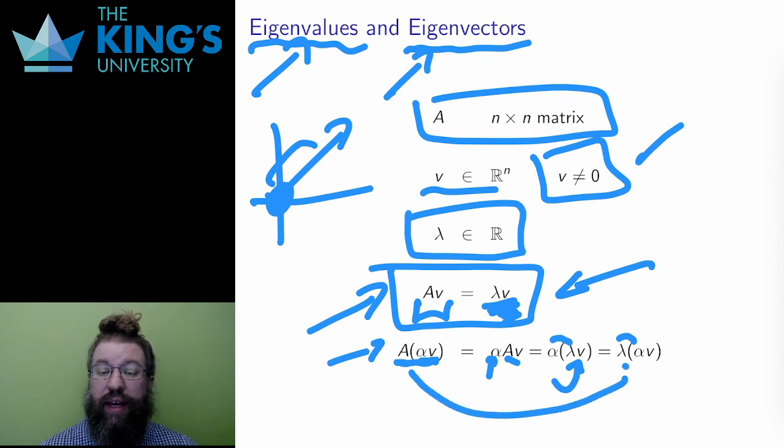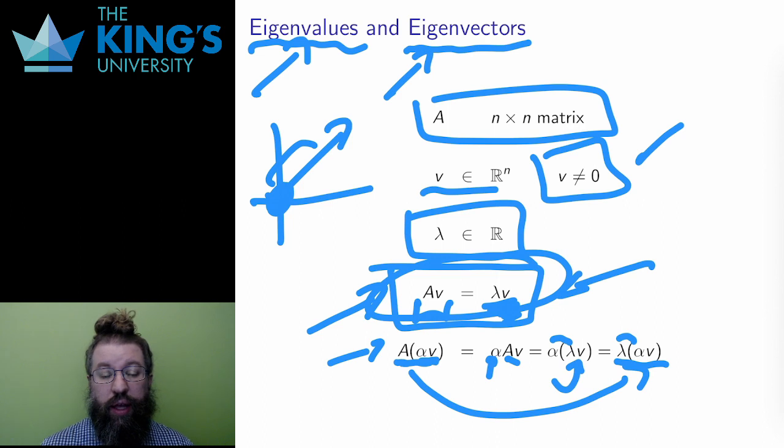And the result is that A acting on alpha V sends it to a multiple of itself, lambda times alpha V. Alpha V also fits the definition of an eigenvector. And in this way, I can tell that if a matrix has an eigenvector, we'll have many different eigenvectors by scaling that eigenvector.